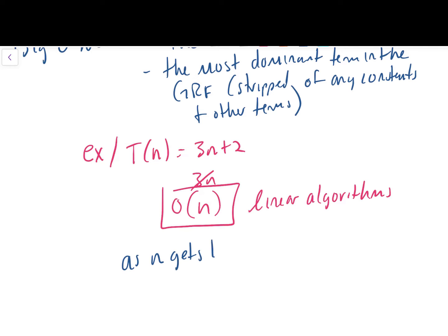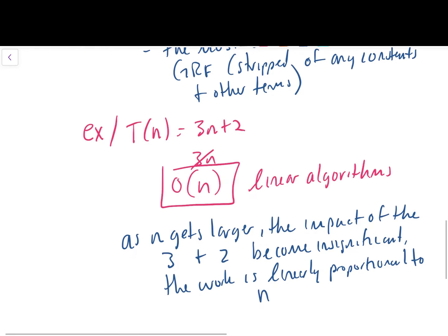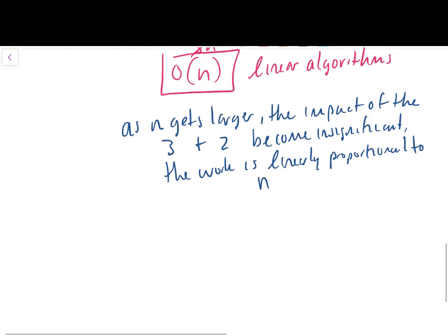So by order here, we mean a mathematical order: the most dominant term in the growth rate function after we've stripped the growth rate function of any constants and other terms. So back to our example here, if our growth rate function is T of n equals 3n plus 2, the most dominant term between 3n and 2 is 3n. And then we strip out any constants. So there goes the 3.